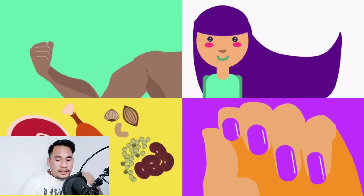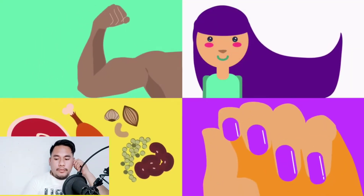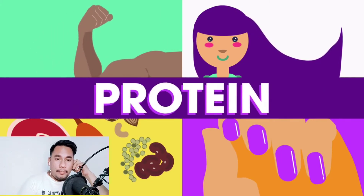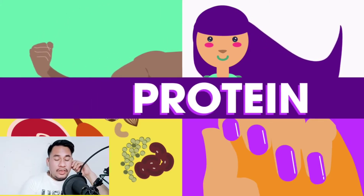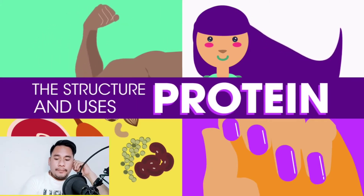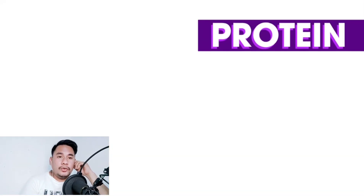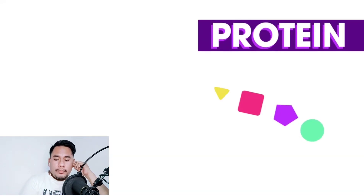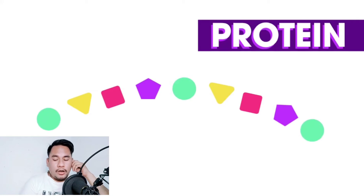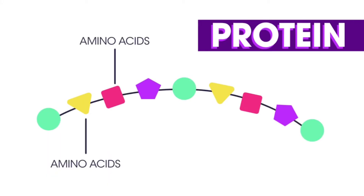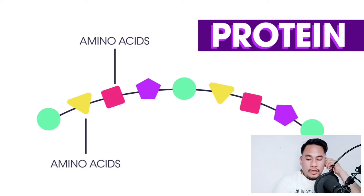What do all these things have in common? They are all made of proteins. In this video, we're going to discuss the structure and uses of proteins. Proteins are long-chain molecules made of amino acids joined together.